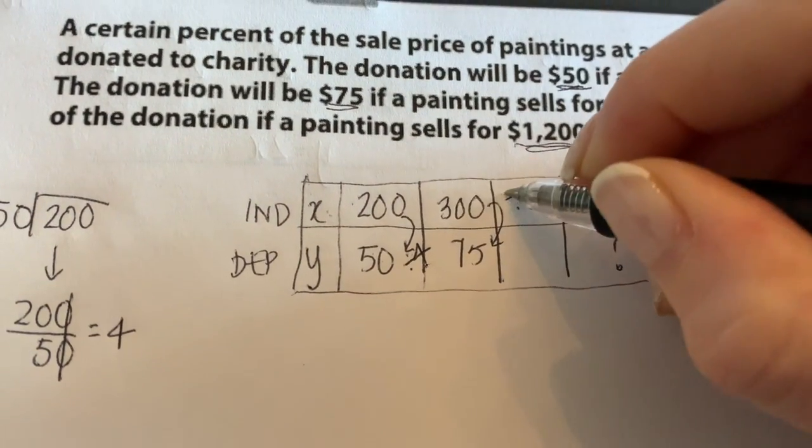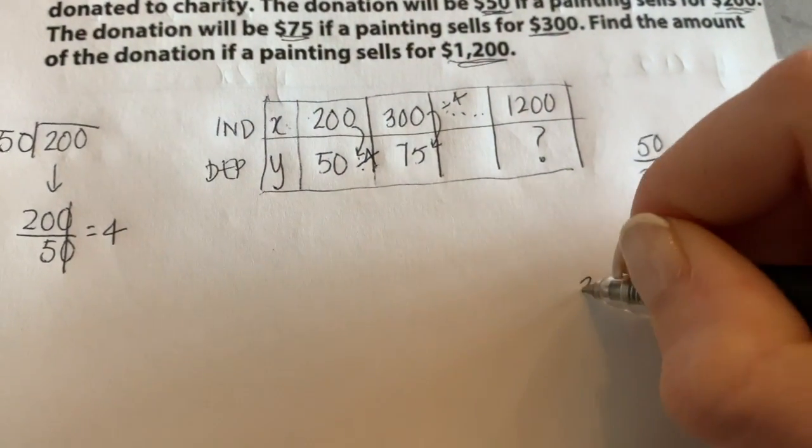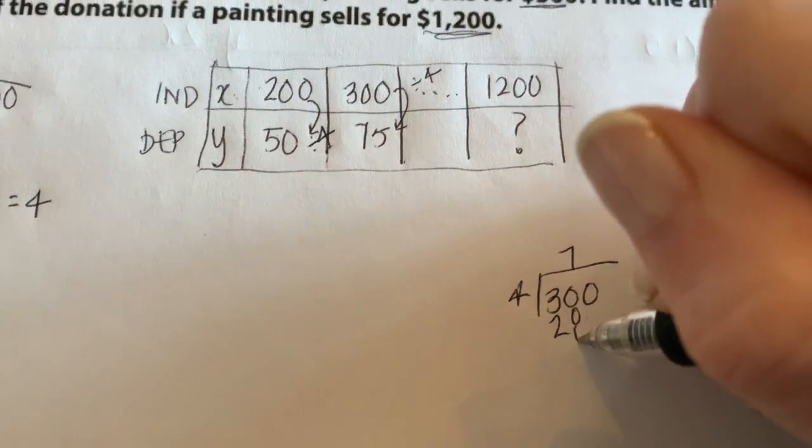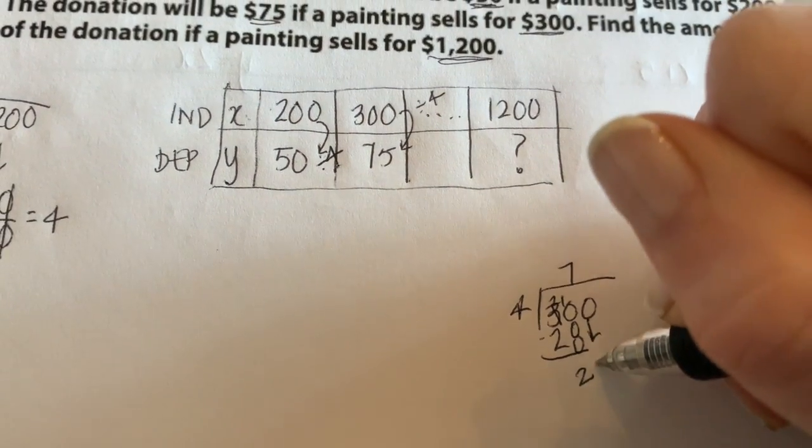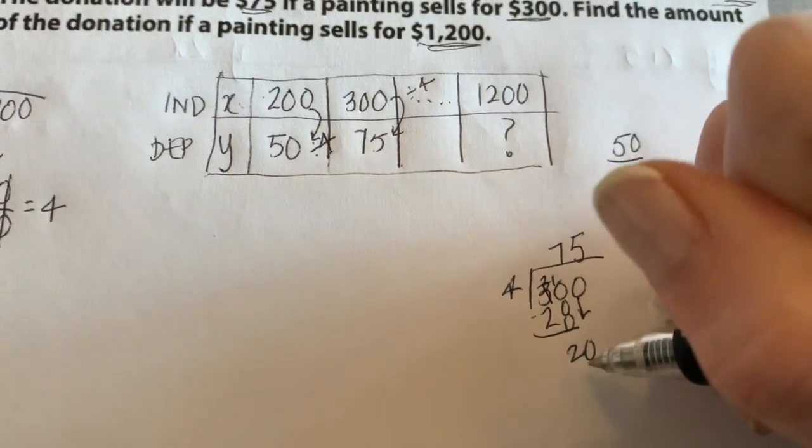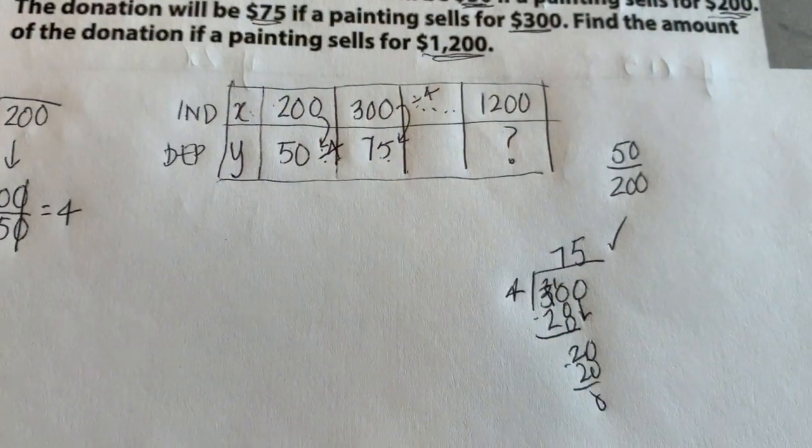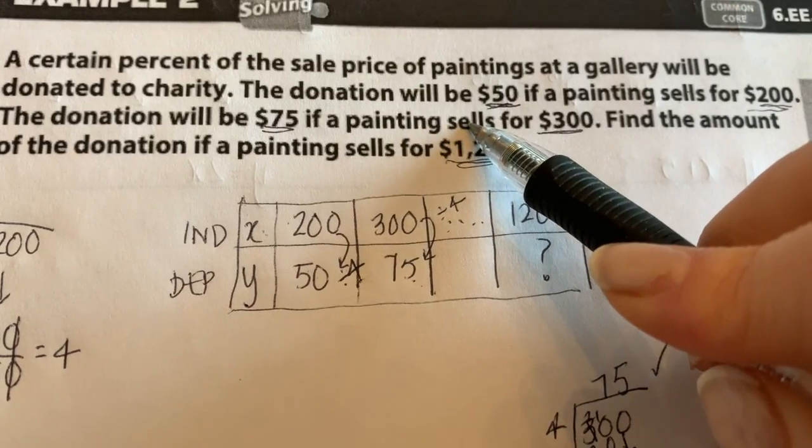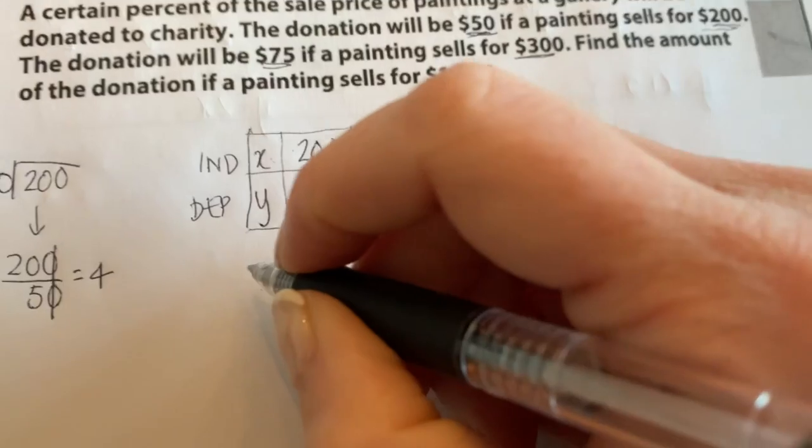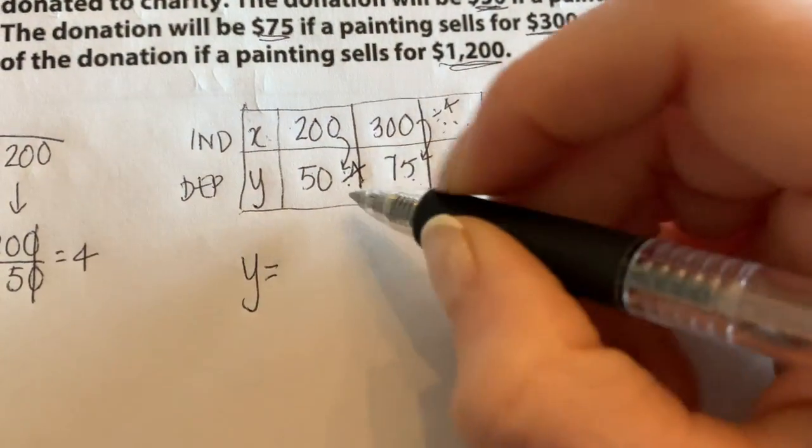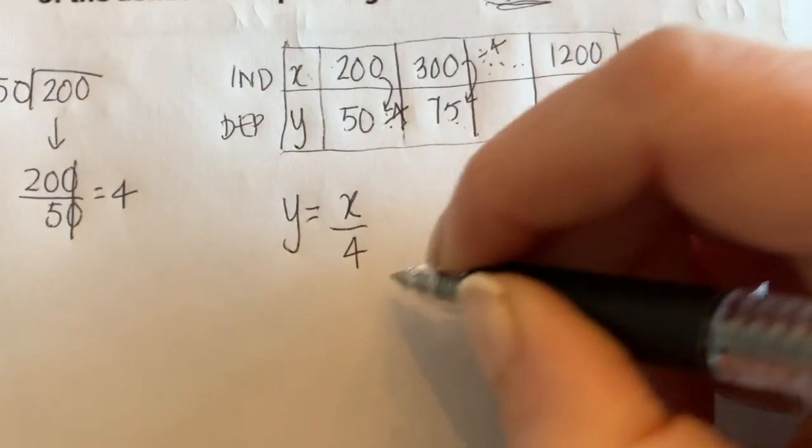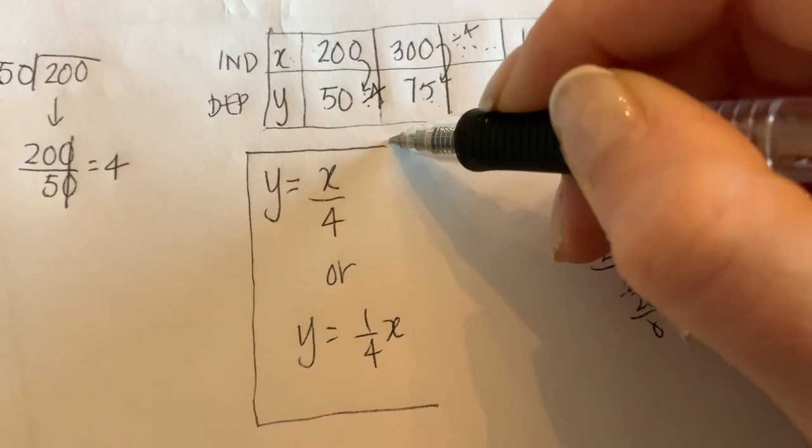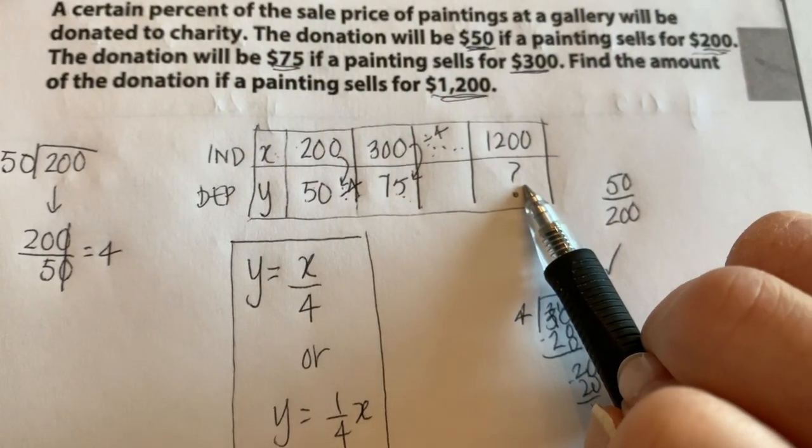To get y from x, I'm dividing by 4. Now let's see if that works here too. We want to check. If I take $300 and I divide it by 4, do I get $75? Let's see. 4 goes into 3 zero times, which is 28. When I subtract here, I get 2. Bring down my 0. 4 goes into 20 five times. Yes, it works. So my pattern is to figure out the amount of the donation, you take the amount that the painting sold for and divide it by 4. If I was going to write an equation here, I would say that I can get y by taking x and dividing it by 4. Another way of writing that would be taking one-fourth of x. That is two ways you could write it.